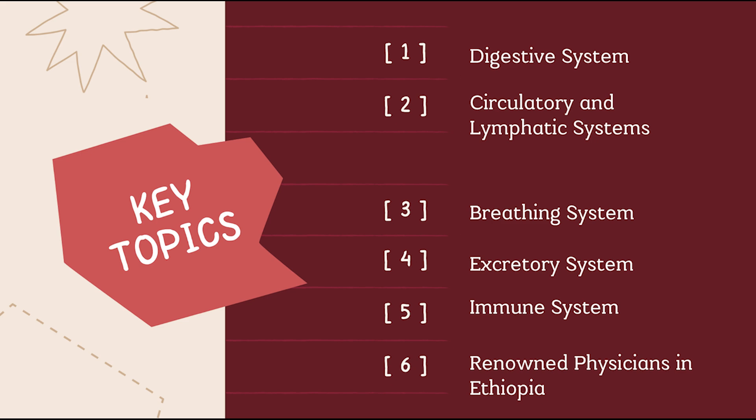This unit covers six major topics: the digestive system, circulatory and lymphatic system, breathing or respiratory system, excretory system, immune system, and a special spotlight on renowned physicians in Ethiopia. Each system plays a unique role in maintaining the balance and health of your body. Let's see what you will be learning.